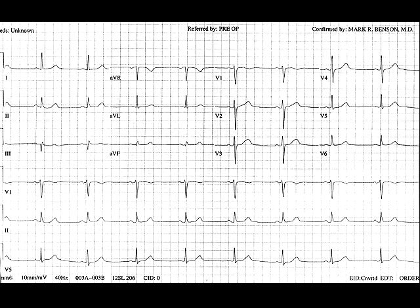When the R-wave progression is delayed, consider anterior MI, pulmonary disease, or clockwise rotation. Next, look for Q-waves. A significant or pathological Q-wave is one that is at least one small box wide and at least a quarter to a third the height of the R-wave.